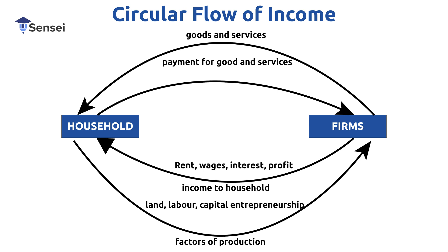The firm uses the factors of production to produce goods and services. The households, who supplied those factors, are also the ones who buy the goods and services from the firm and make payments back to the firm. So income flows from household to firm, and back from firm to household in a circular manner.